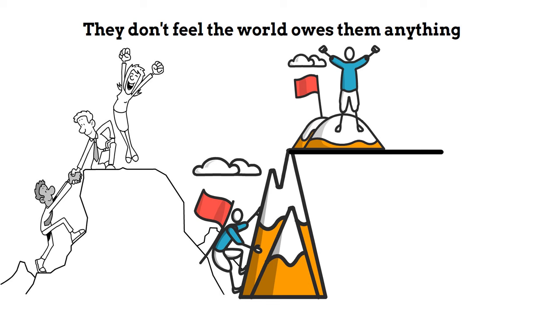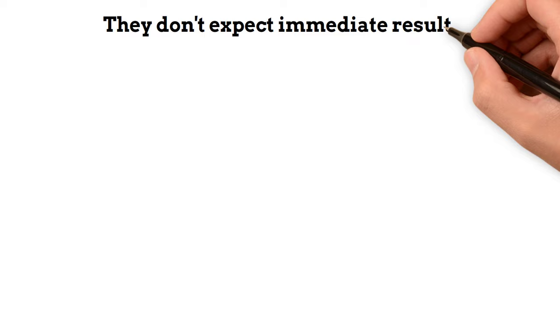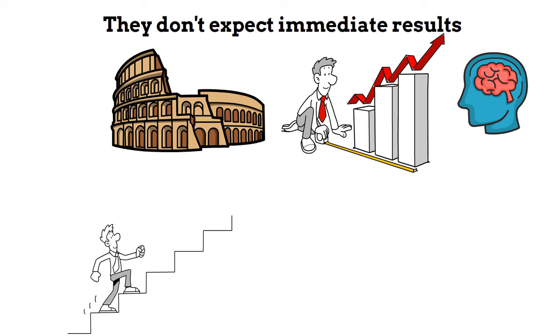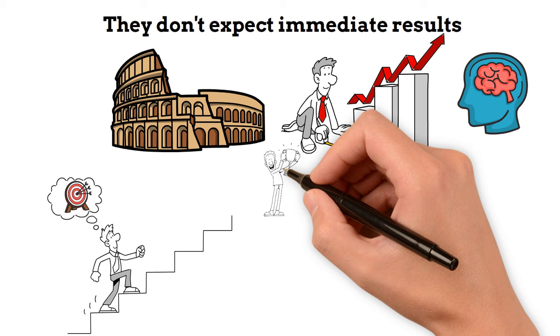Eleven: They don't expect immediate results. Rome wasn't built in a day, and neither is personal growth. Mentally strong people understand that progress takes time and are patient with themselves along the way. Set realistic goals and celebrate small victories to stay motivated on your journey to mental strength.